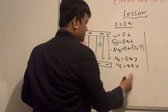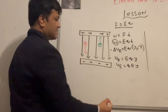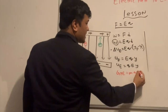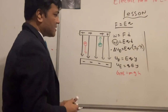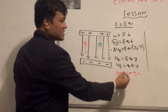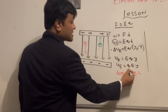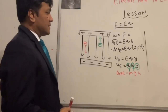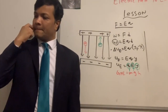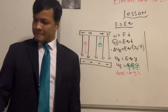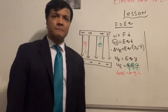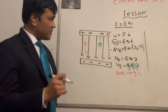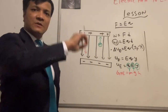Electric potential energy = qEy. Have you seen something like that before? Gravitational potential energy is mgh. The analogy: q corresponds to m, E corresponds to g, and y corresponds to h. Both g and E are constants; both m and q can vary.